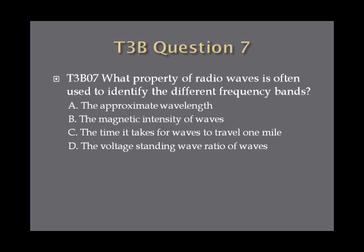Question 7. What property of radio waves is often used to identify the different frequency bands? A, the approximate wavelength. B, the magnetic intensity of waves. C, the time it takes for waves to travel one mile. Or D, the voltage standing wave ratio of waves.